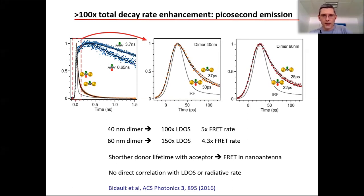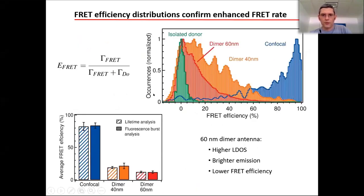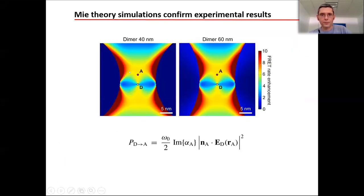If you increase the LDOS a lot but increase the FRET rate less, you actually lose FRET efficiency. FRET efficiency is the ratio of the FRET rate to the FRET rate plus the total decay rate. If the total decay rate is increased 100 times but the FRET rate only 5 times, the FRET efficiency shrinks completely. Using nanophotonics requires carefully balancing the increase in FRET rate against the increase in other radiative and non-radiative decay rates of the donor.